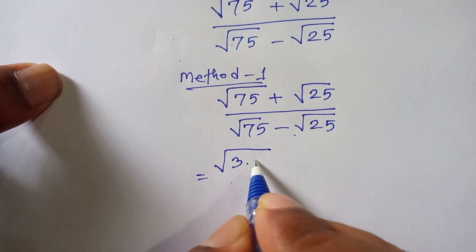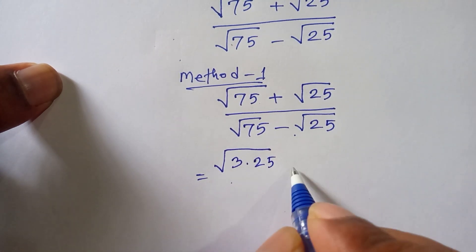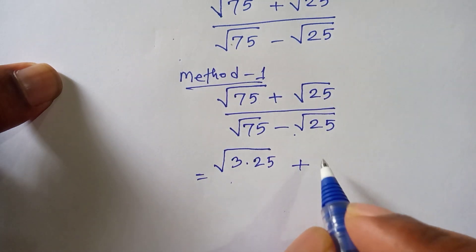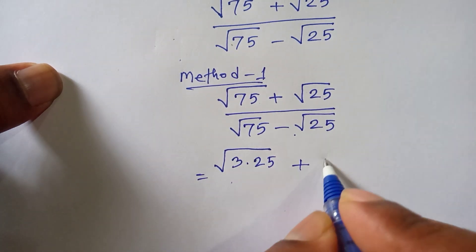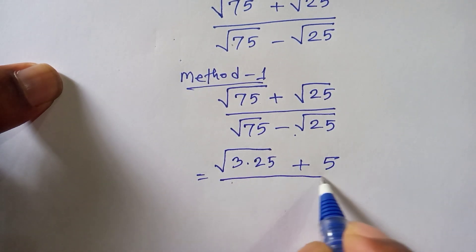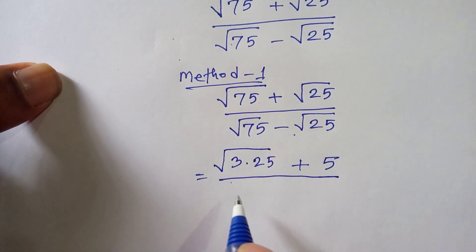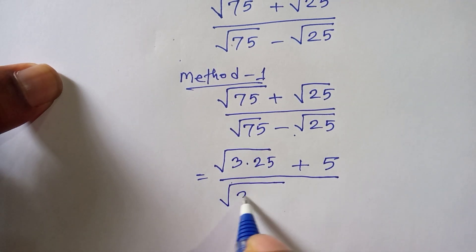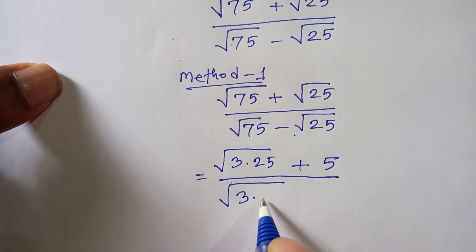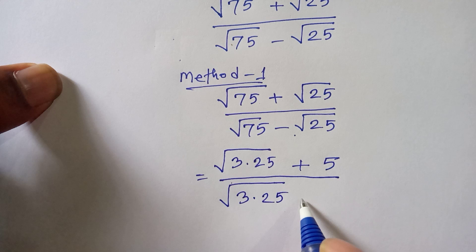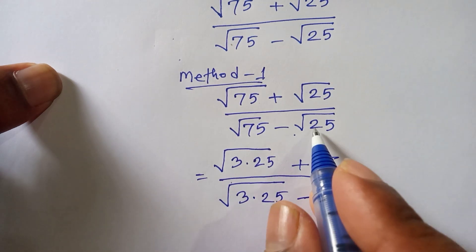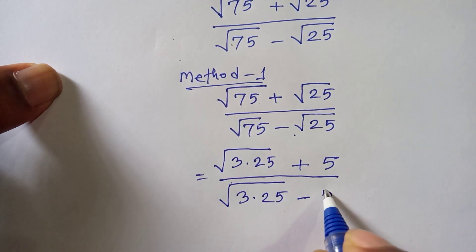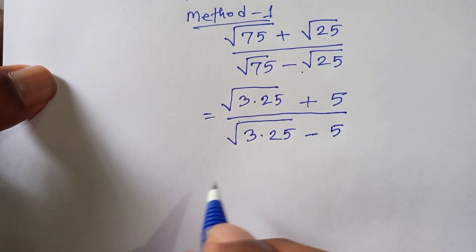So the numerator becomes under a square root of 3 times 25, plus under a square root of 25 which is 5. The denominator becomes under a square root of 3 times 25, minus under a square root of 25 which is 5.